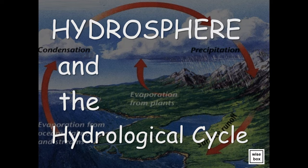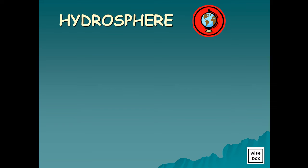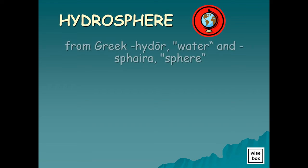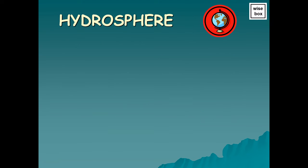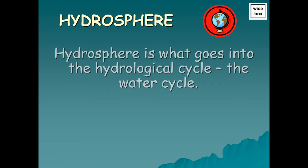The Hydrosphere and the Hydrological Cycle. Hydrosphere comes from Greek 'Hydor'. The term hydrosphere refers to the water on the Earth's surface, whether this be in a liquid, frozen, or gas or water vapor form. The hydrosphere is what goes into the hydrological cycle, the water cycle.